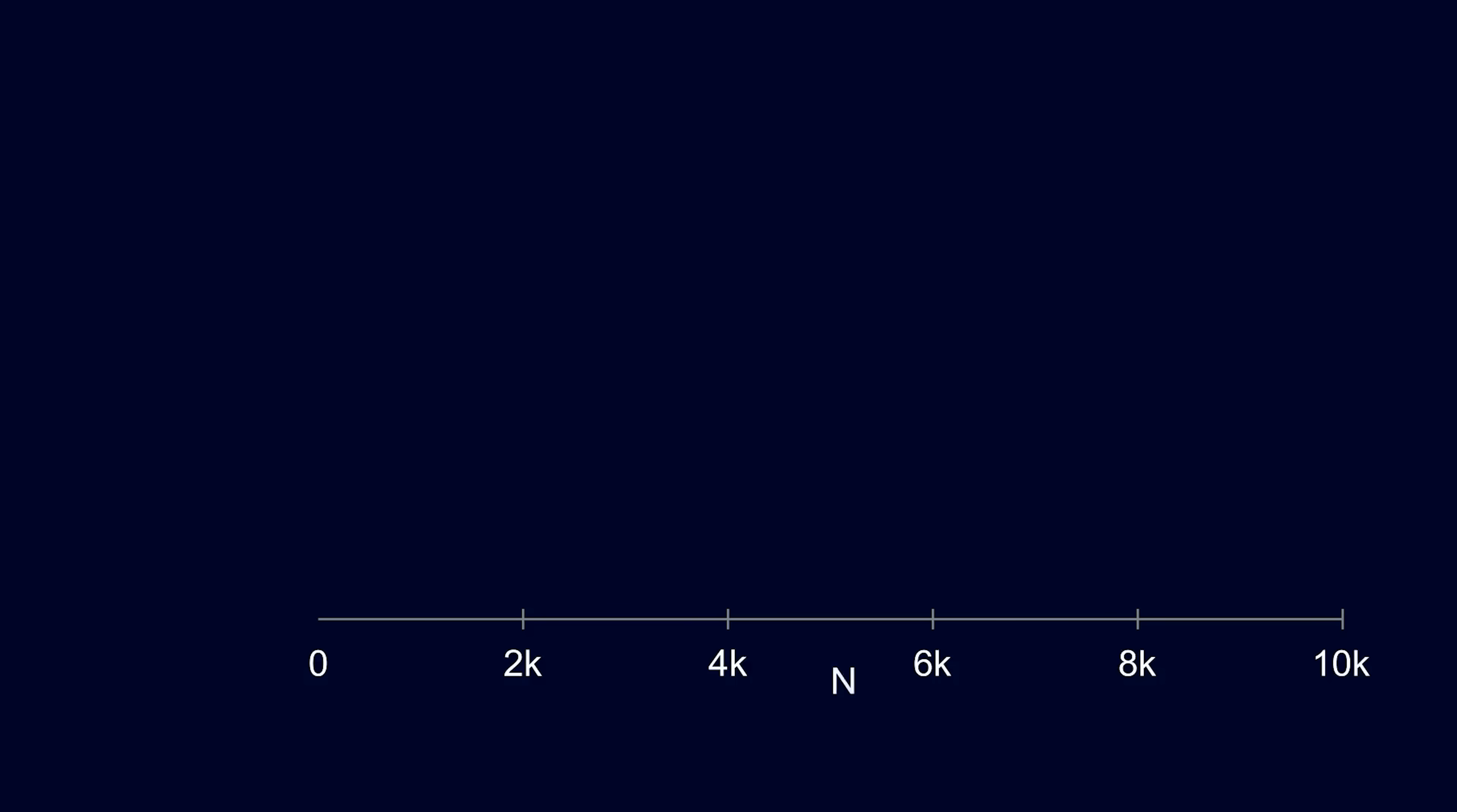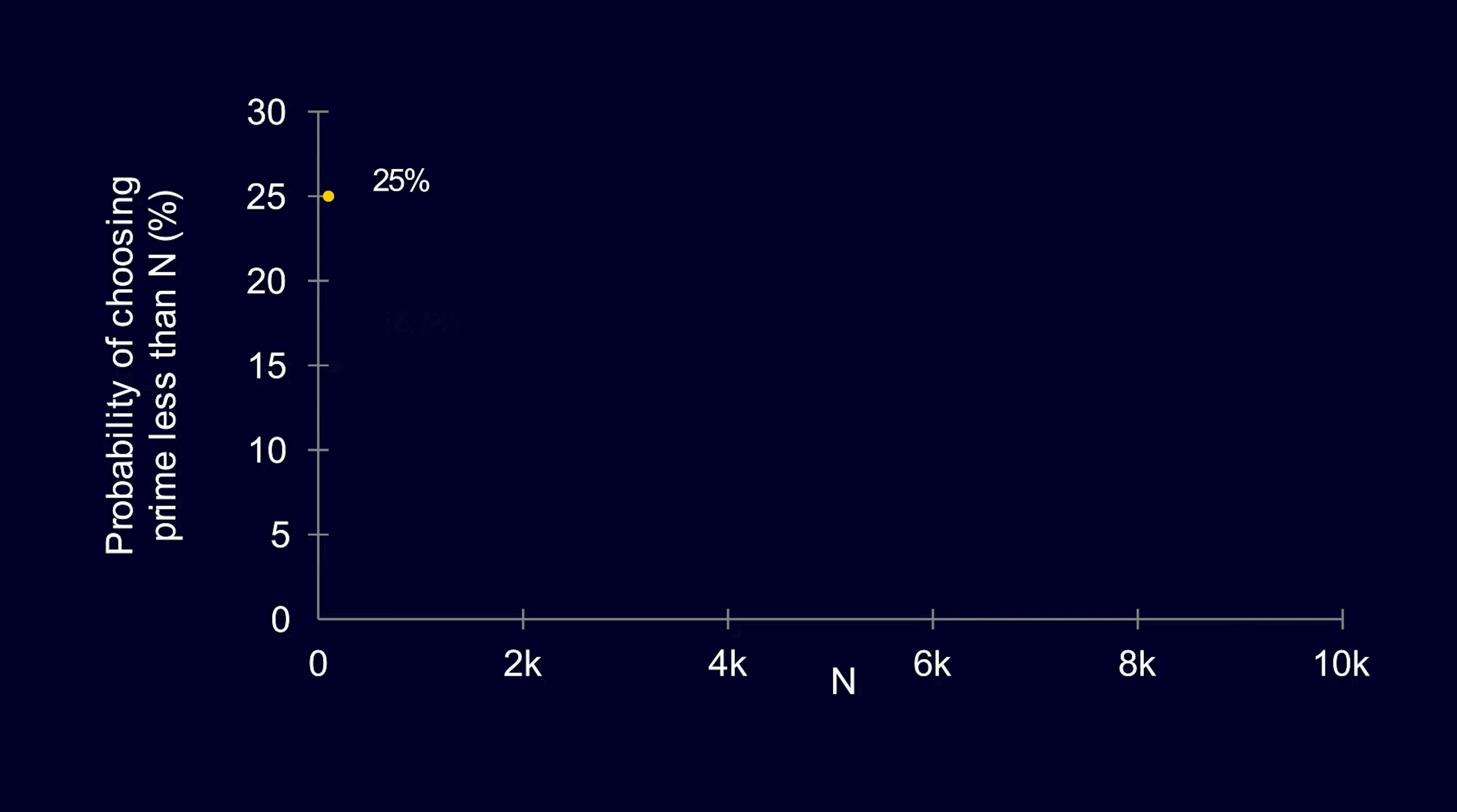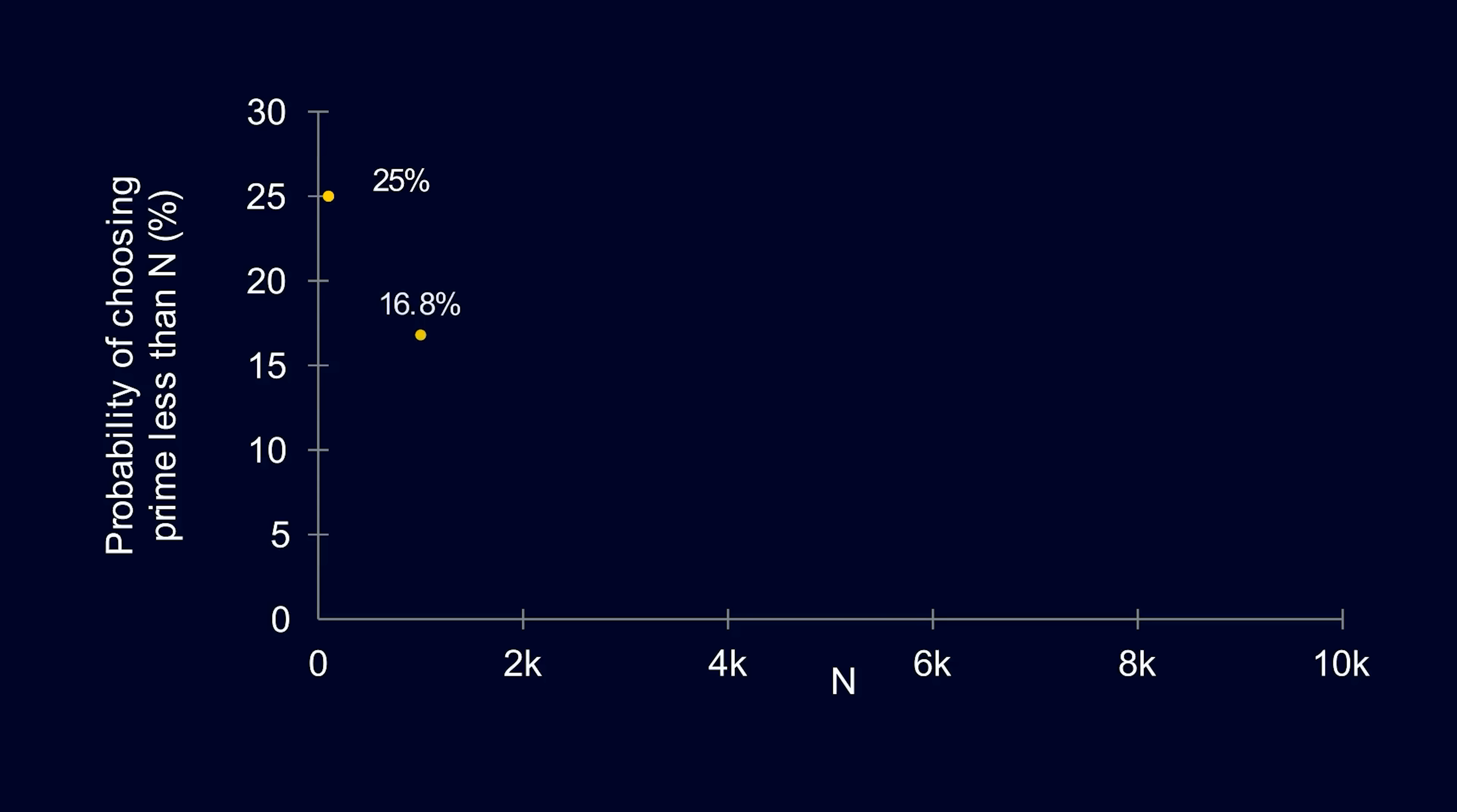On the x-axis, we have n. The y-axis is the probability of us choosing a prime less than n. For n equals 100, the probability is 25%. For n equals 1000, the probability is 16.8%. Here are some examples of values.